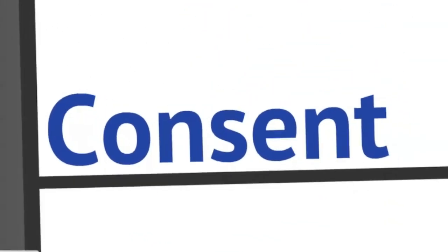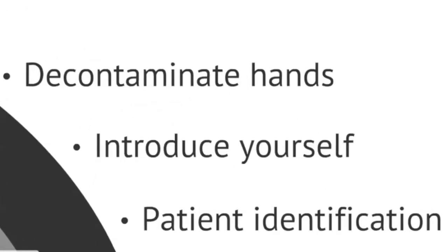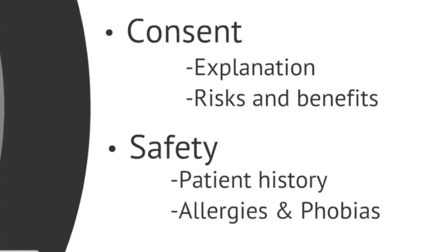Stage one involves obtaining consent from the patient. When you enter the patient environment you must decontaminate your hands, introduce yourself and identify the patient using full name, date of birth and hospital number. This should be done by checking the patient wristband against an official hospital document such as the doctor or nursing notes. You can then move on to gaining informed consent. In order to do this you should provide the patient with a simple explanation of what you would like to do and why.